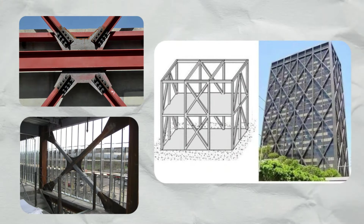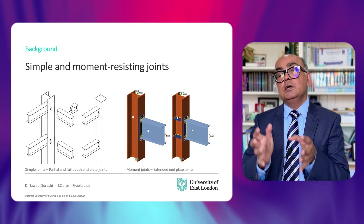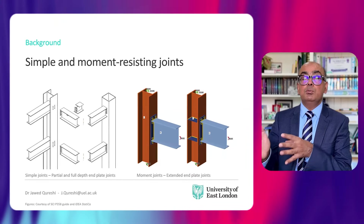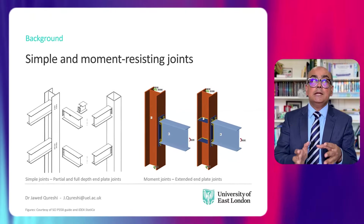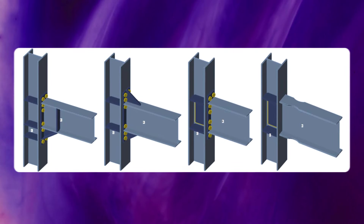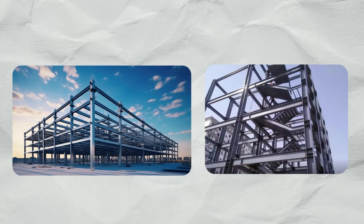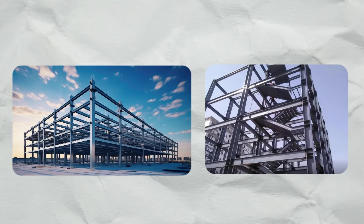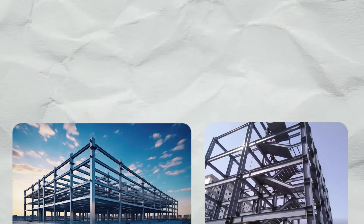Simple frames transfer shear only and stability is provided by moment-resisting frames. Simple joints allow rotation between members. On the other hand, moment or fixed frames transfer both shear and moment, and stability is provided by fixity or rigidity of the joints. In theory, no rotation should take place between members in moment-resisting frames. However, in real life, most frames show some form of moment and rotation, resulting in semi-rigid behavior.